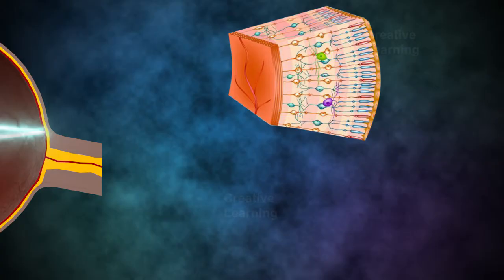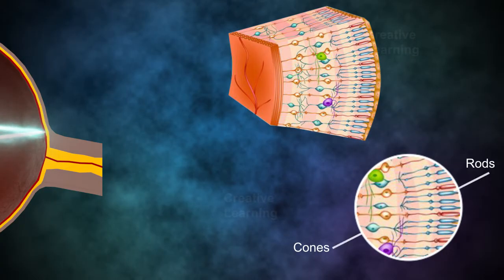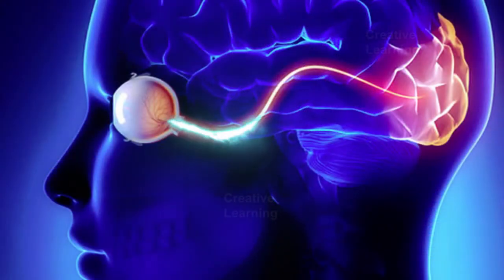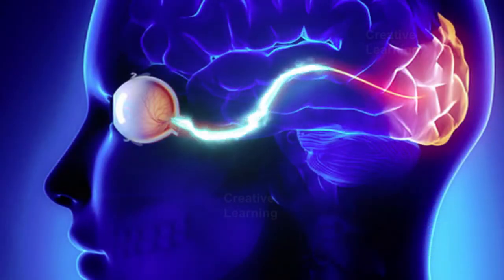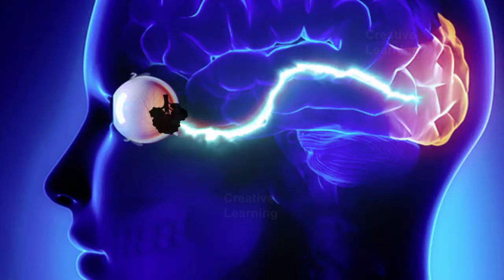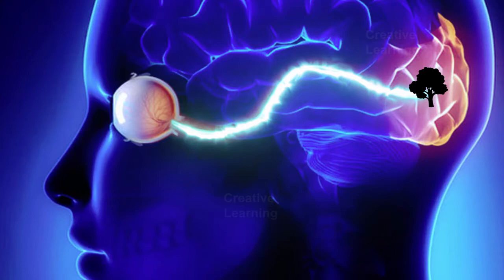The retina is a light-sensitive structure made up of rods and cones. Rods sense the intensity of light and cones sense color. These signals are transmitted via the optic nerve to the visual center of the brain in the occipital lobe. The brain translates the electrical signals into an upright image.